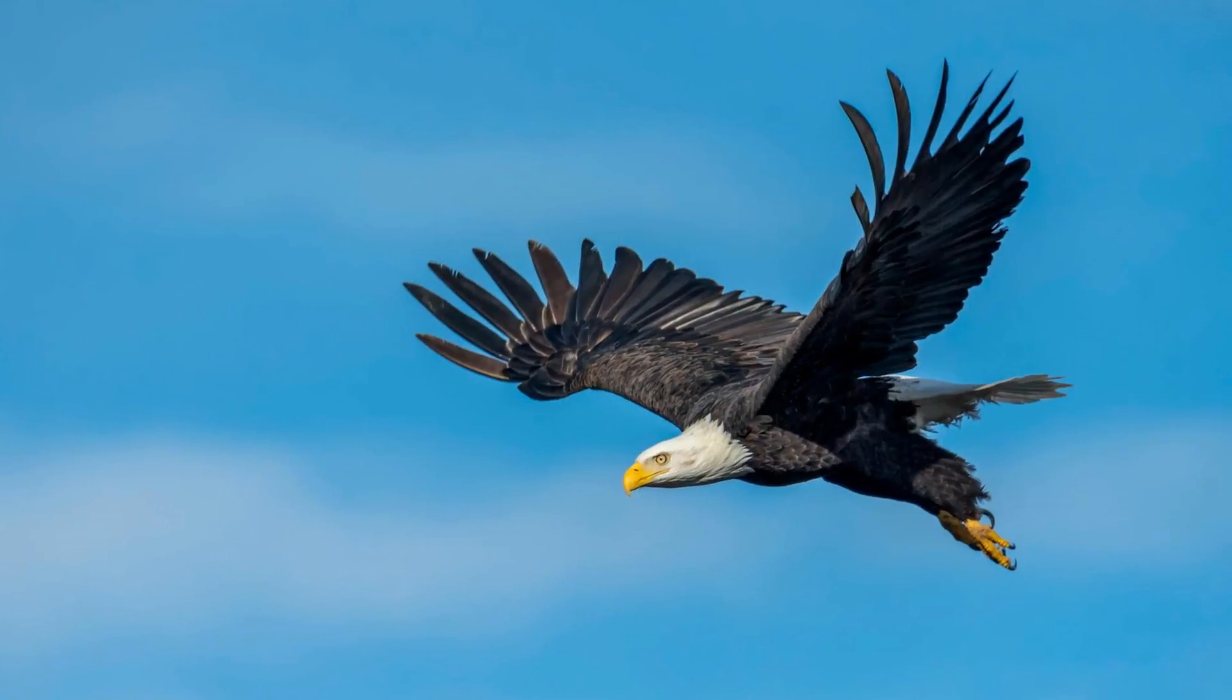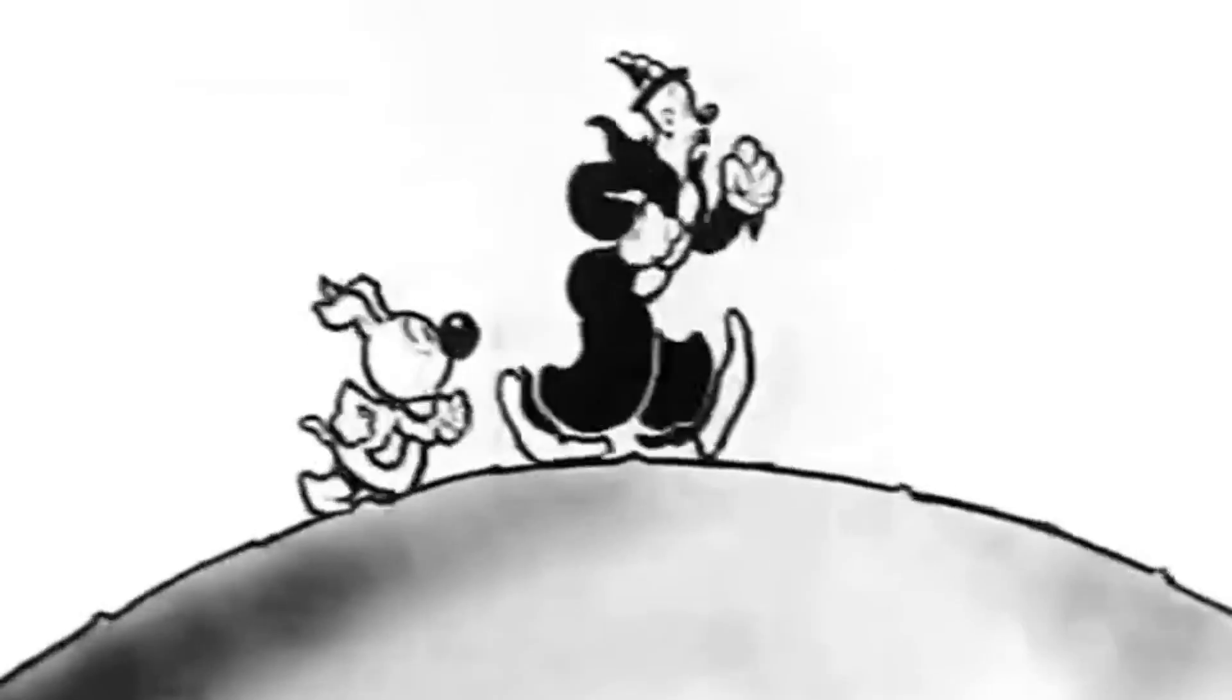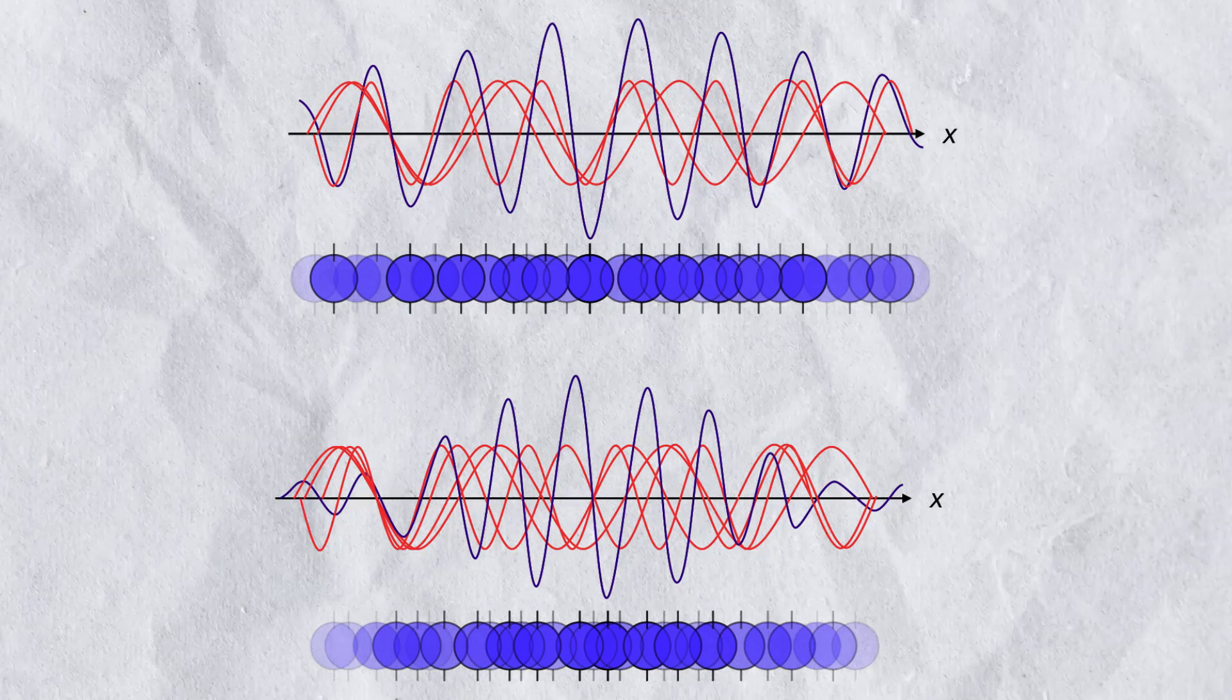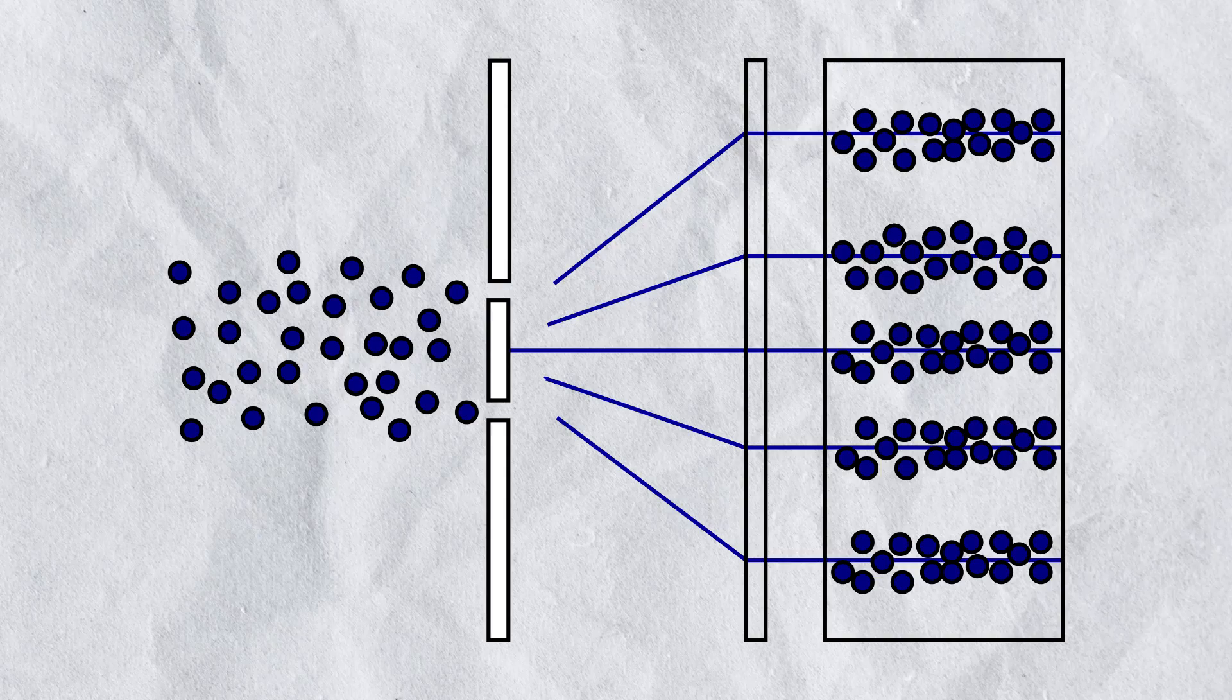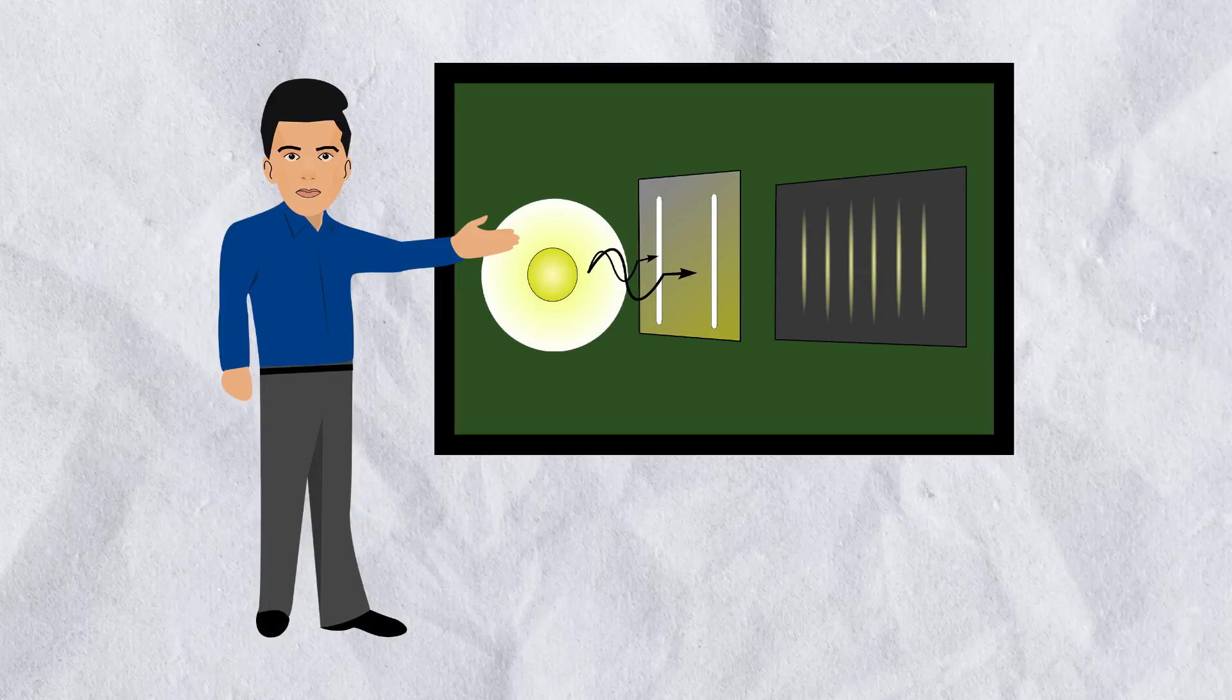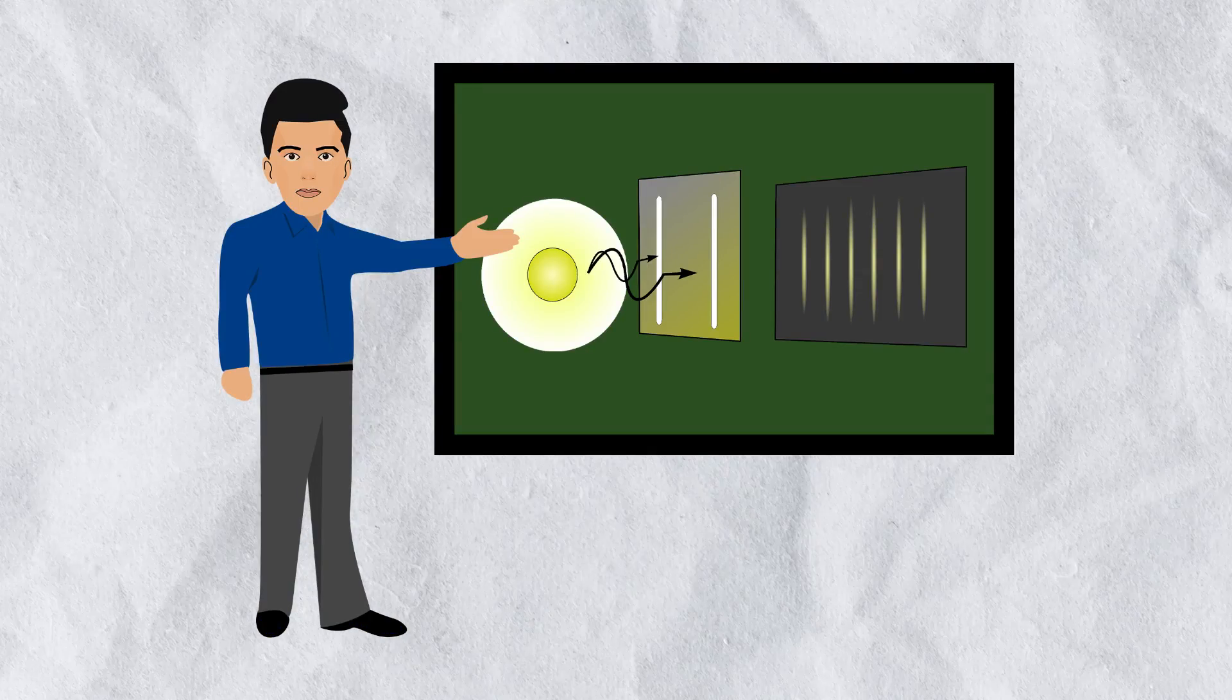Filming a runner or a bird will not interfere with their performance, but this isn't the case in quantum mechanics. The moment you place a detector to see which slit the electron goes through, the system will actually change. This is what the double slit experiment shows us.